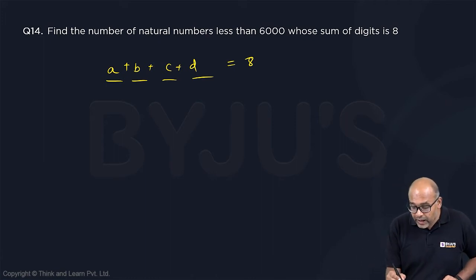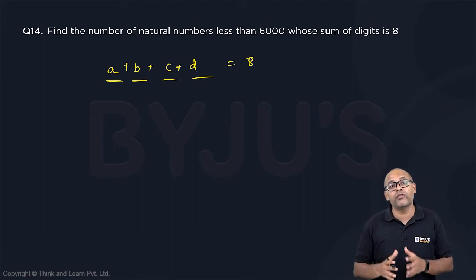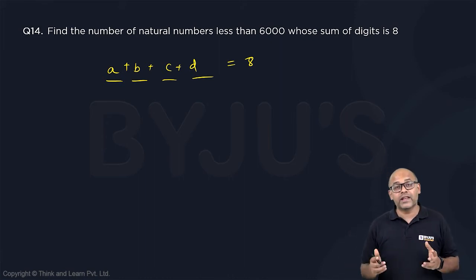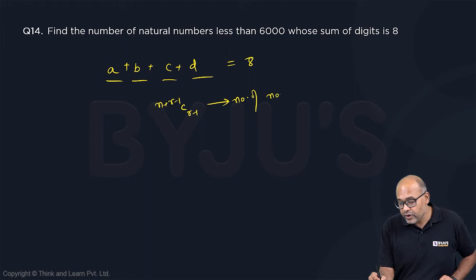Now I will use the, I hope you remember in P and C there is a concept called number of non-negative integral solutions. So if that is the case you can basically take a look at sum should be 8. So n plus r minus 1 C r minus 1 is the number of non-negative integral solutions.